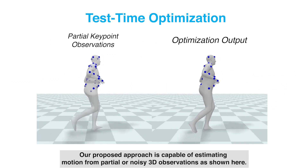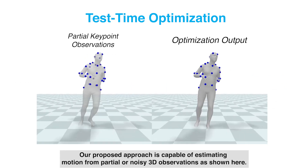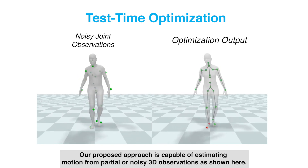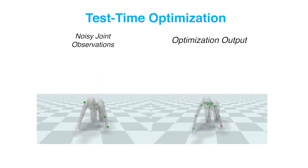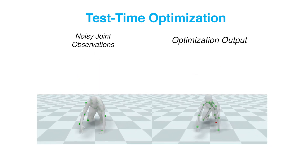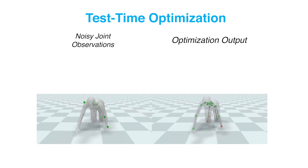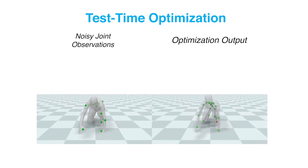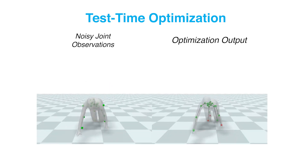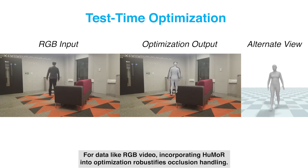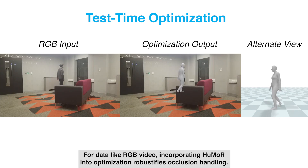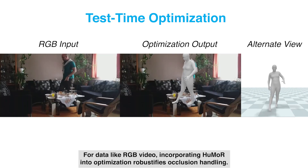Our proposed approach is capable of estimating motion from partial or noisy 3D observations, as shown here. For data like RGB video, incorporating HUMOR into optimization robustifies occlusion handling.